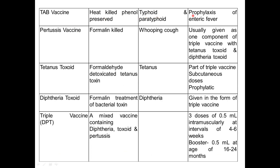The TAB vaccine is a prophylactic vaccine given to prevent enteric fevers. The pertussis vaccine is killed using formalin and is effective against the bacteria causing whooping cough. Tetanus toxoid is formaldehyde-detoxicated tetanus toxin. Diphtheria toxoid is made by formalin treatment of the toxin. The DPT injection combines whooping cough, tetanus, and diphtheria and is given as three doses of 0.5 ml intramuscularly, at intervals of four to six weeks.